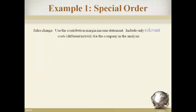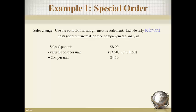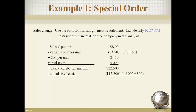Sales will change with the special order. We will use the contribution margin income statement and include only the identified relevant items in the analysis. First, compute the contribution margin per unit — a change in total makes the item relevant; the per unit amount can stay the same and still be relevant. Multiply the contribution margin per unit by the units in the special order to get the total contribution margin, then subtract the added fixed costs to get the change in profits from the special order.